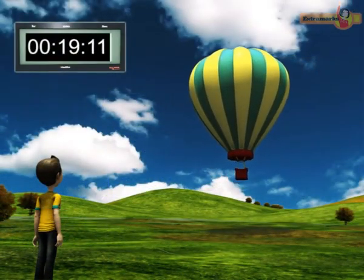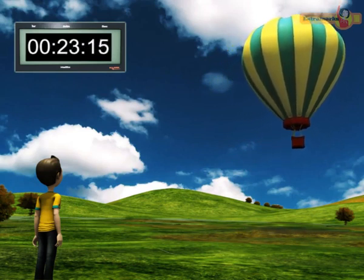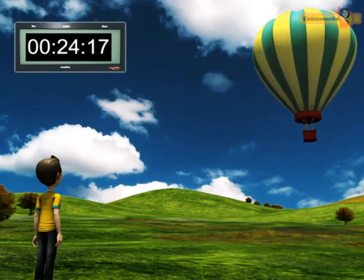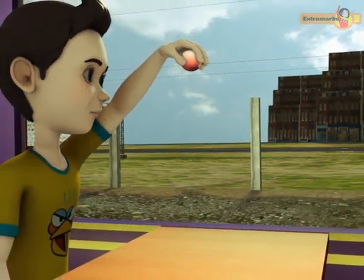To measure time, a clock is put in this system to specify at what time the object is at the given position. This coordinate system along with the clock constitutes a frame of reference. Description of the motion or an event depends on the frame of reference chosen for the description.